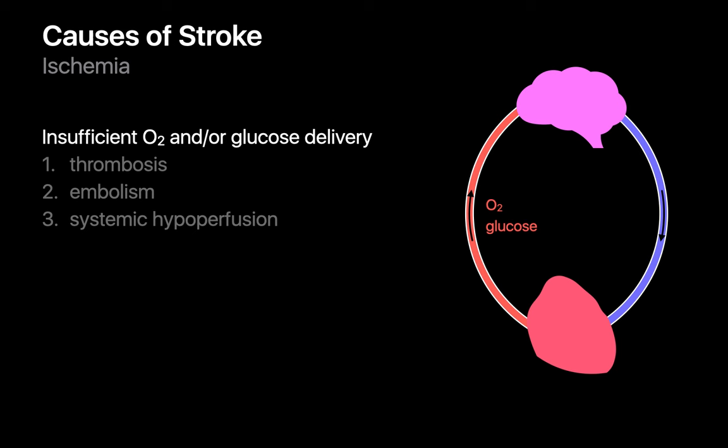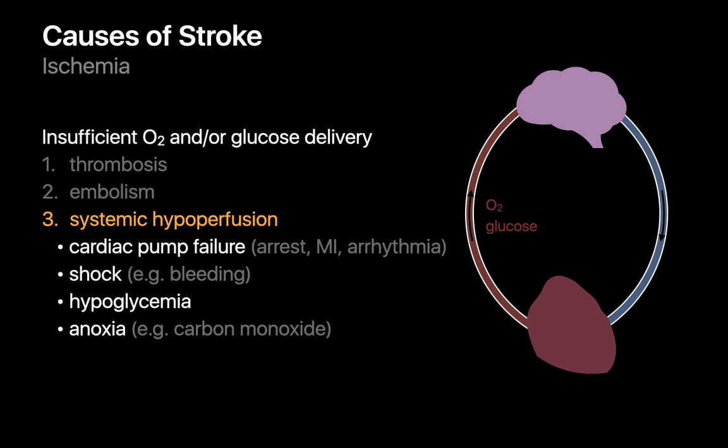A cardiac septal defect permits something to bypass the pulmonary capillary bed and move directly from the systemic venous to systemic arterial circulation. A third reason why oxygen or glucose delivery to the brain may be interrupted is systemic hypoperfusion in the setting of cardiac pump failure, shock, hypoglycemia, or anoxia.